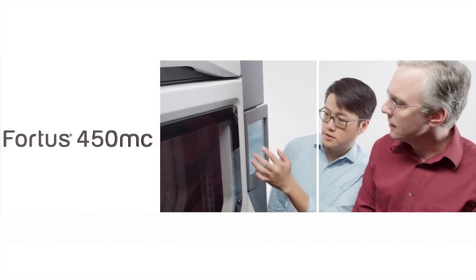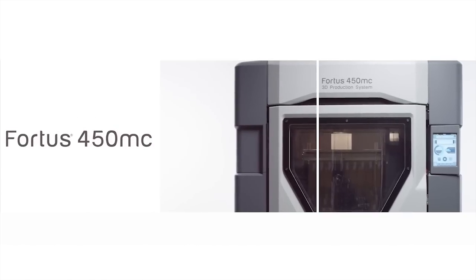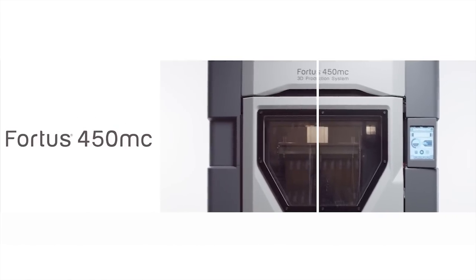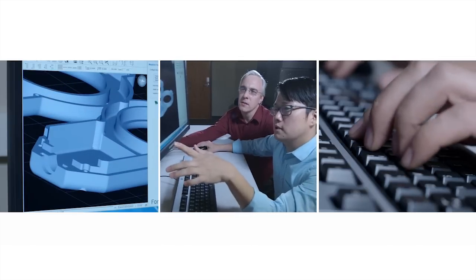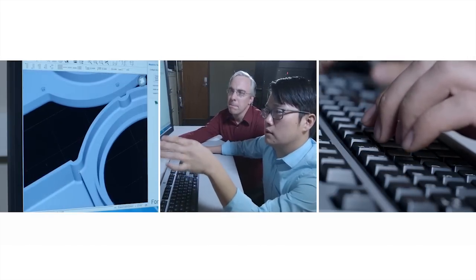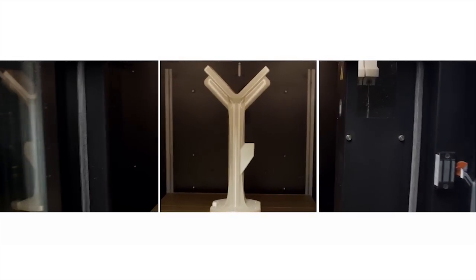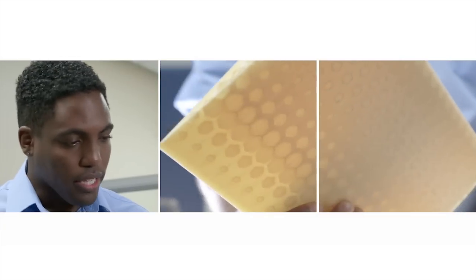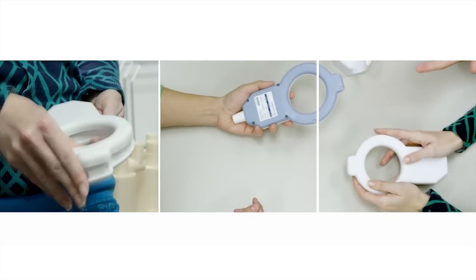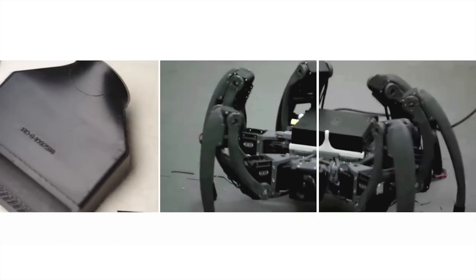The next addition to the Fortis family is the Fortis 450MC 3D production system. Featuring all of the ease-of-use advancements as the Fortis 380MC, along with a larger build envelope, the Fortis 450MC is ideal for creating mid-size parts, including functional prototypes, production aids, and end-use parts.